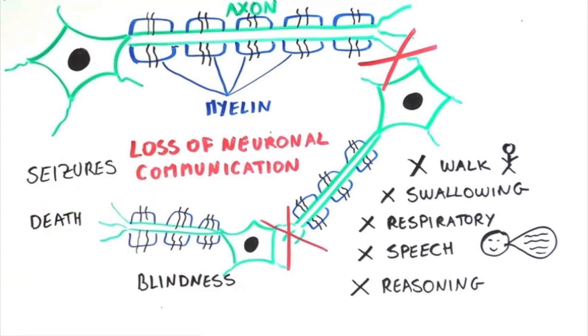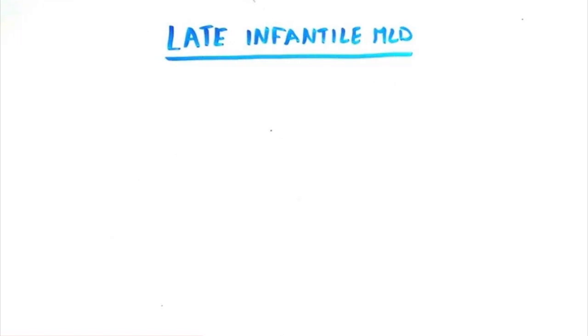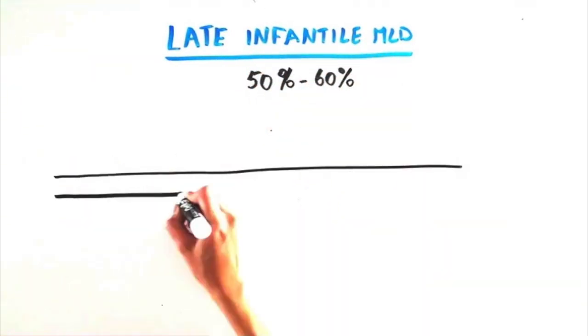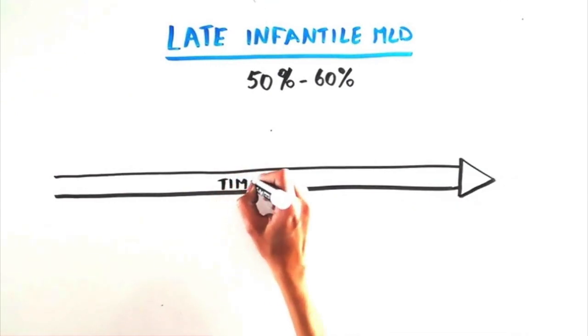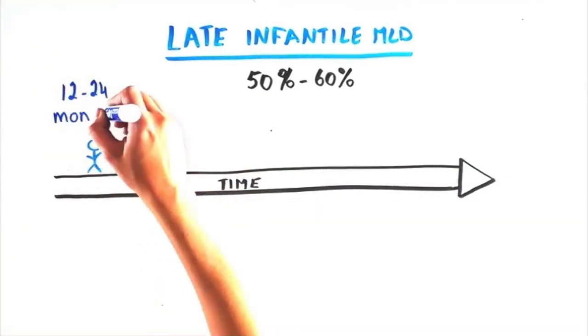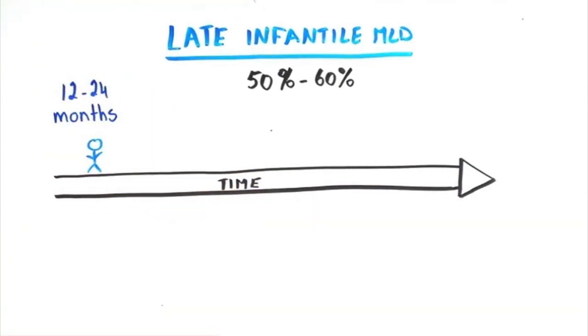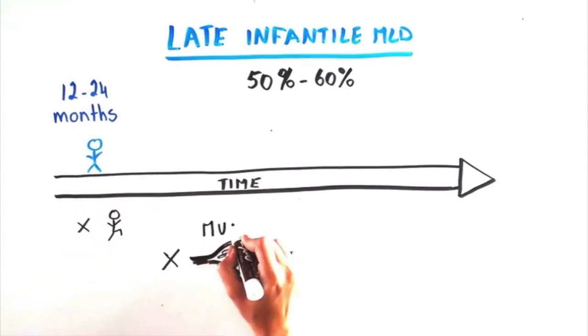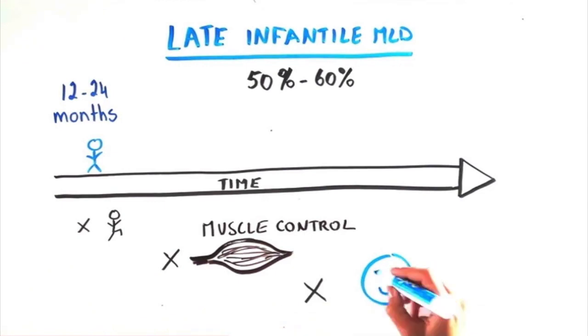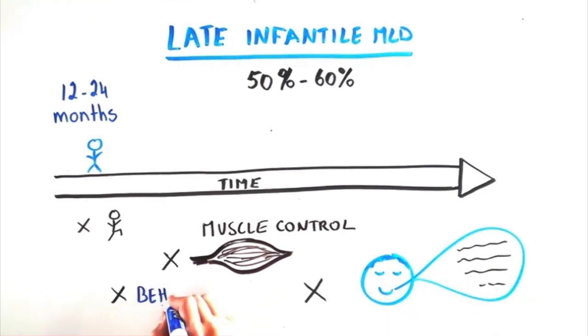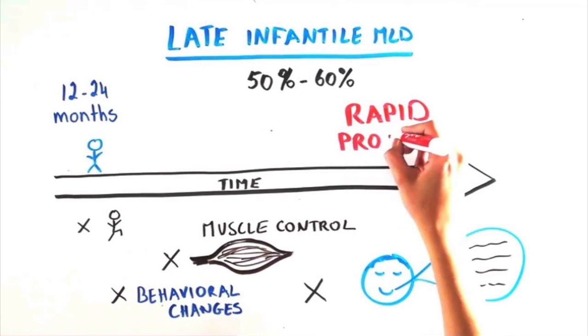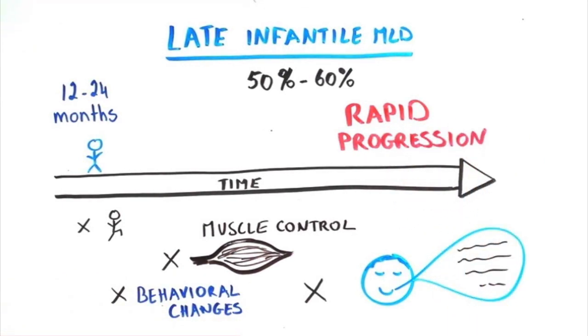There are three different clinical forms of MLD. Late Infantile MLD represents 50-60% of cases with first symptoms between the ages of 12 and 24 months. It is often diagnosed after a child stops or fails to walk, loses muscle control, has difficulty swallowing and speaking, or shows behavioral changes. Progression can be very rapid, often measured in weeks and months.